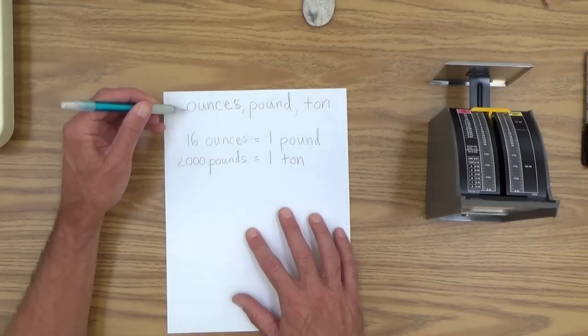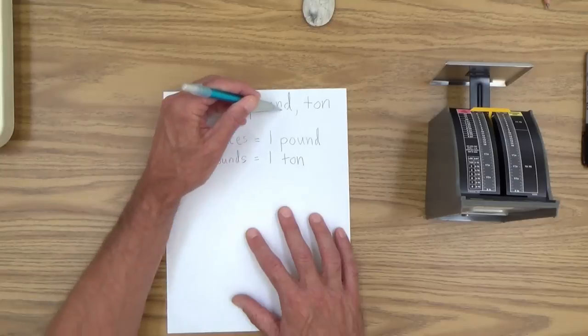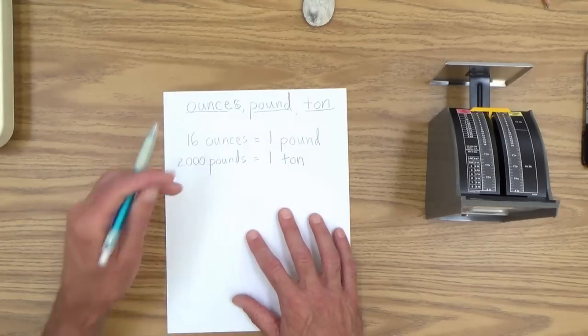And what are the equivalencies? You can write these out for him. And of course, he or she can practice writing these out. 16 ounces equals one pound. And 2,000 pounds equals one ton. So those are the ones we'll be working with here. Nothing fancier than that. Ounce, pound, and ton.